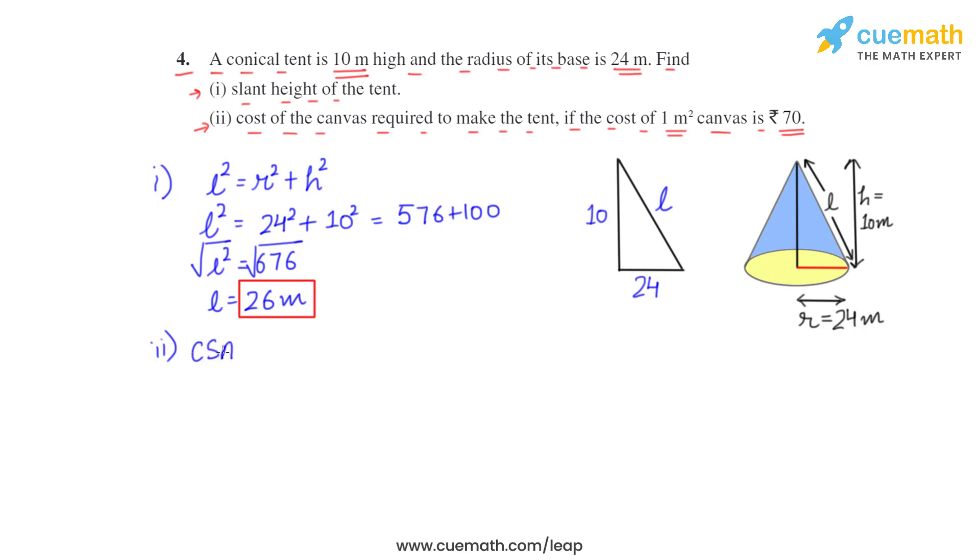So curved surface area of cone, we know that it is pi into r into l. We have to take 22 by 7, then radius is 24 and l is 26, that is slant height. When we calculate this, this comes out to be 13,728 divided by 7 square meters of canvas. So for now let's keep it in fraction only.